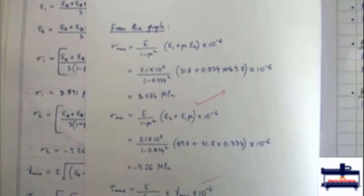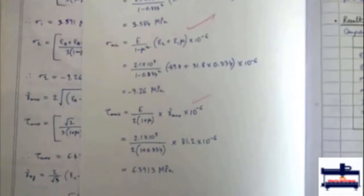So using those values from the circle we use these equations and we calculate the new sigma max, sigma min and tau max values.